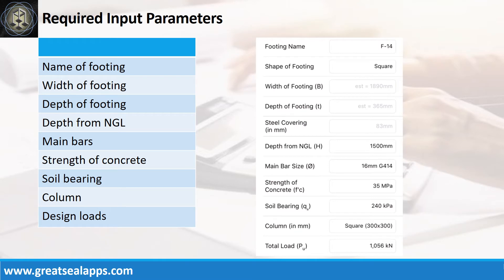Enumerate input parameters required: Footing name, F-14. Shape of footing, square. Depth from natural grade line, 1,500 mm. Main bars, 16 mm bar at grade 414. Strength of concrete, 35 MPa. Soil bearing capacity, 240 kPa. Column size, 300 mm by 300 mm. And factored load, 1056 kN.